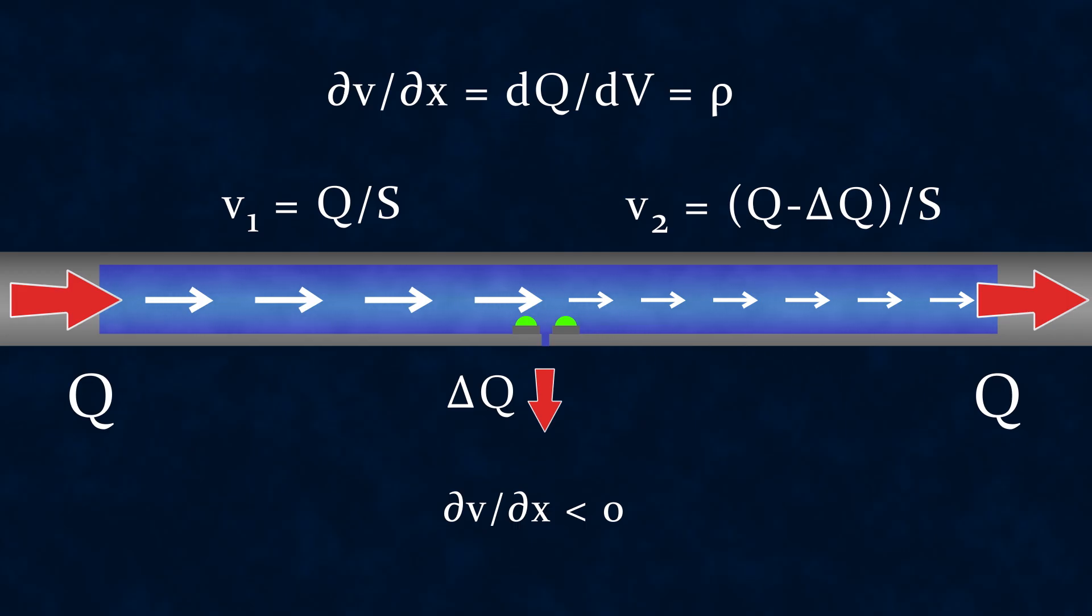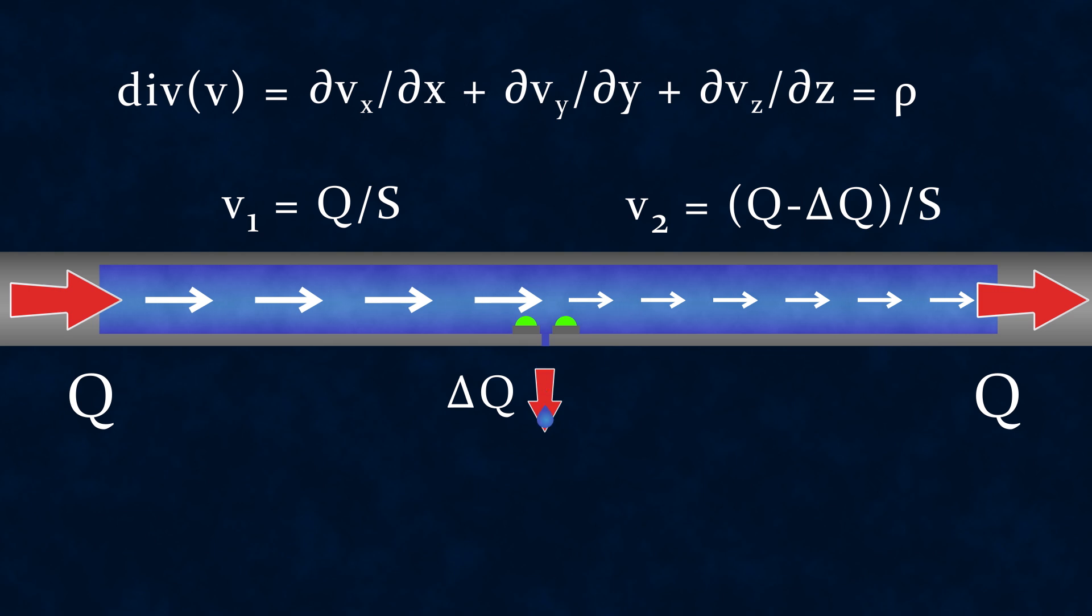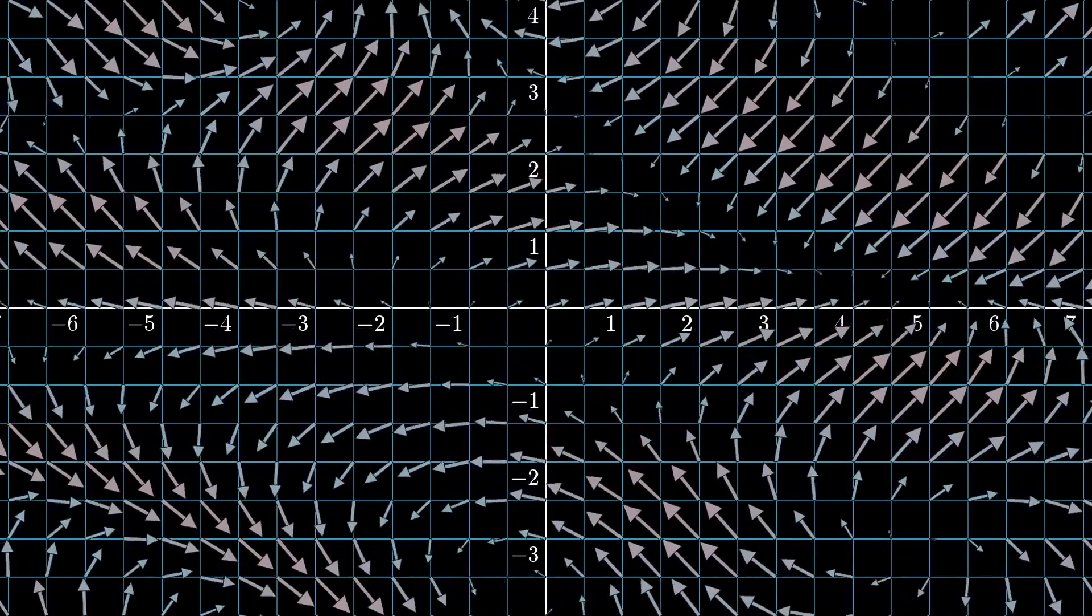Obviously, the same will be observed in the case where liquid is not leaking out of the pipe, but on the contrary, an additional volume of liquid flows into it. Our formula will still work, but the sign of the derivative will be positive instead of negative. In fact, this is the very thing we call the divergence of the liquid's velocity. More precisely, this is how it looks in the simplest one-dimensional case. In three-dimensional space, the divergence is written in the following way, where vx, vy, and vz are the components of the flow velocity along the corresponding coordinate axes in the Cartesian coordinate system.